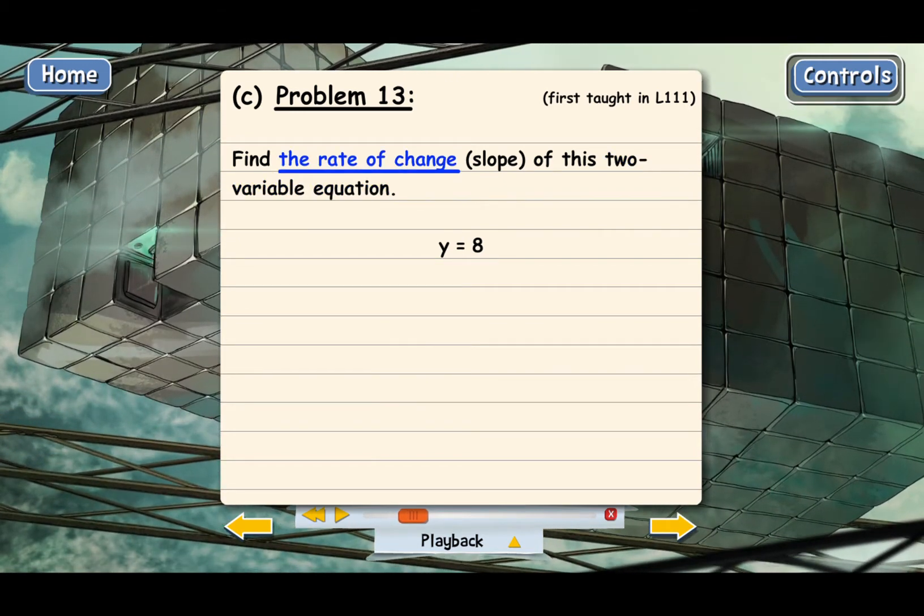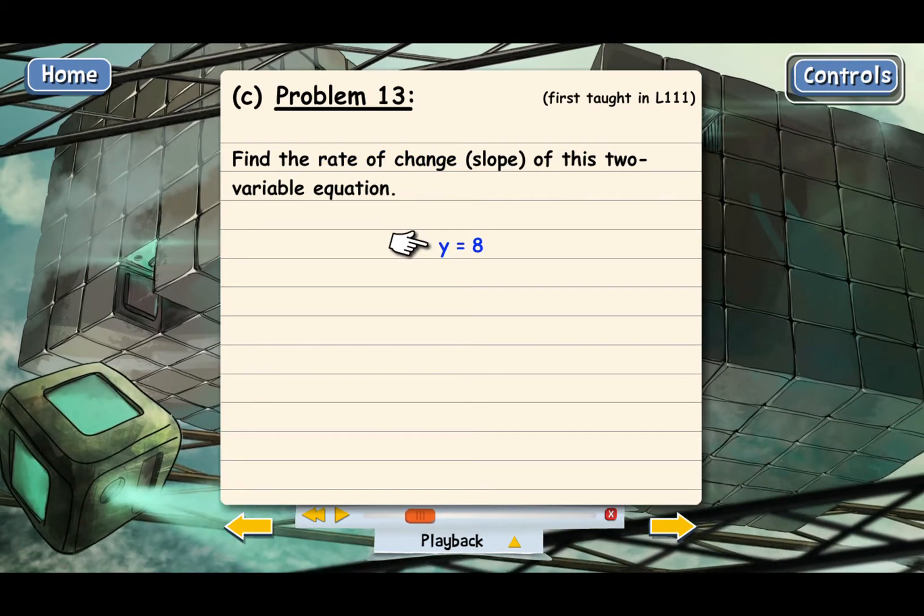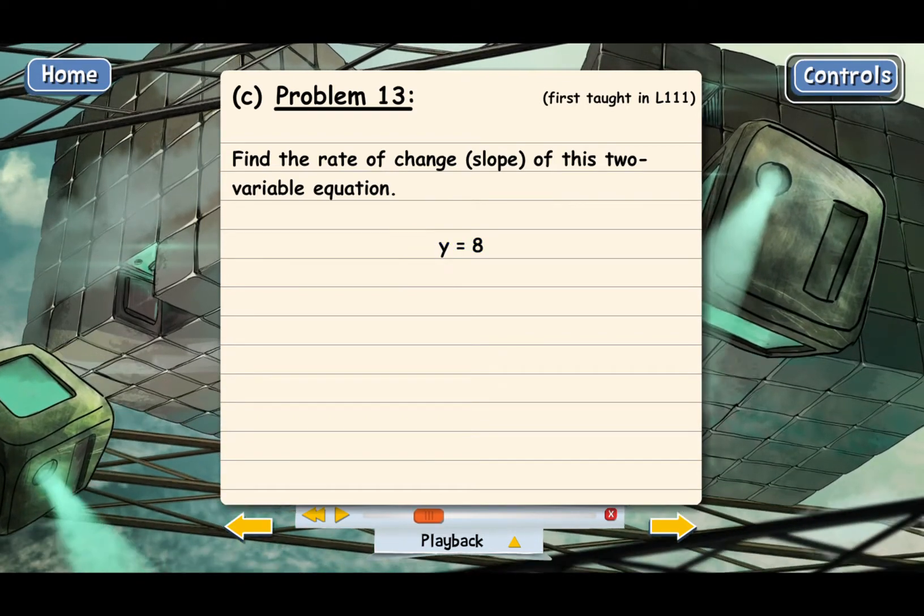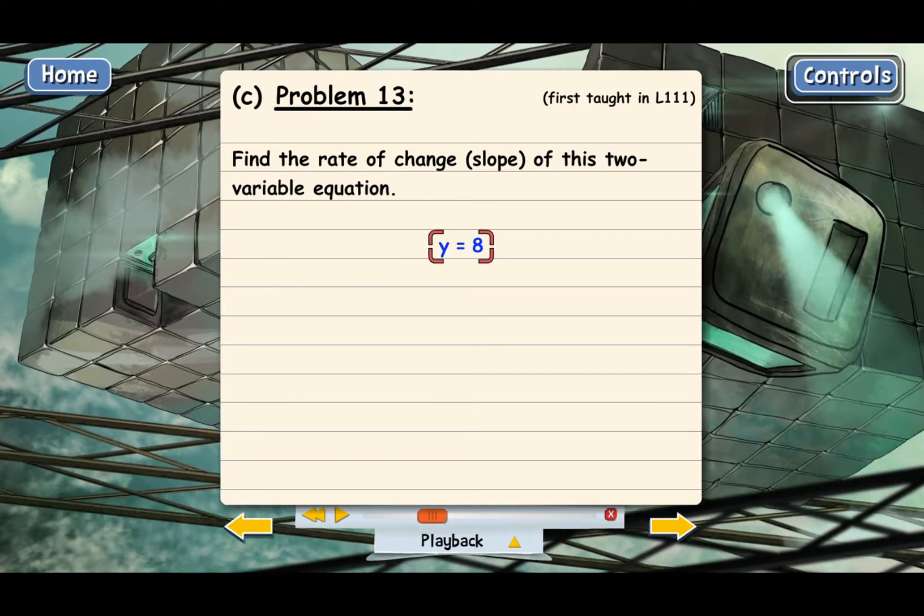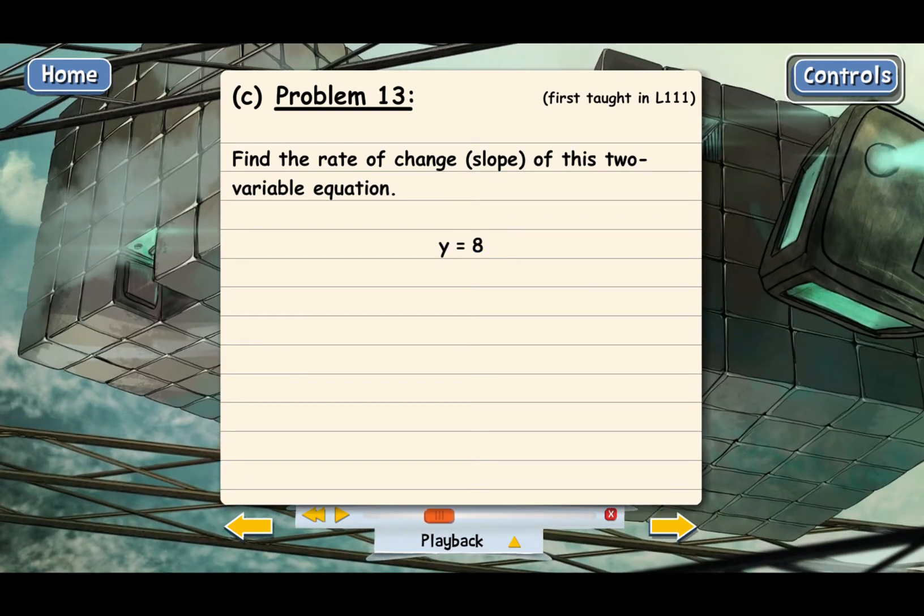We're looking for the rate of change for both of the variables. Notice that in this equation y equals 8, we only have a y. But we know there's an x in here somewhere, and what this tells us, since we can't see x, is that x must have a coefficient of 0.